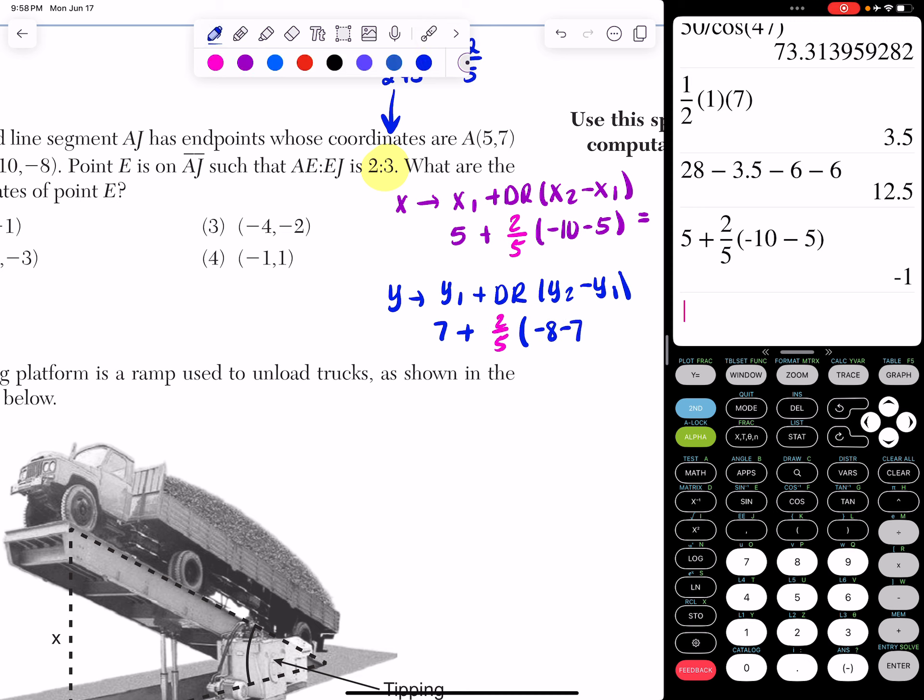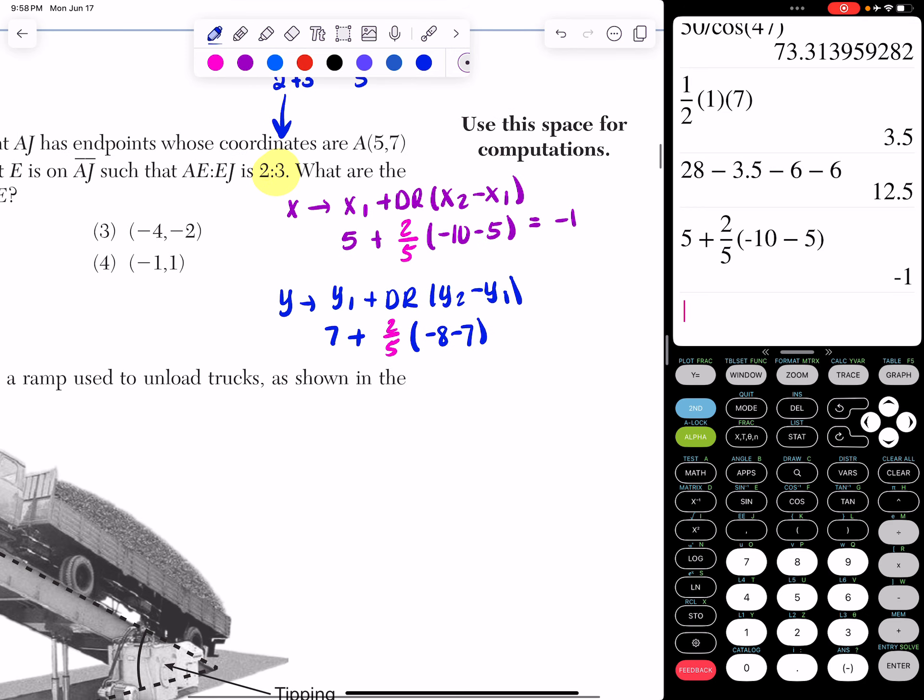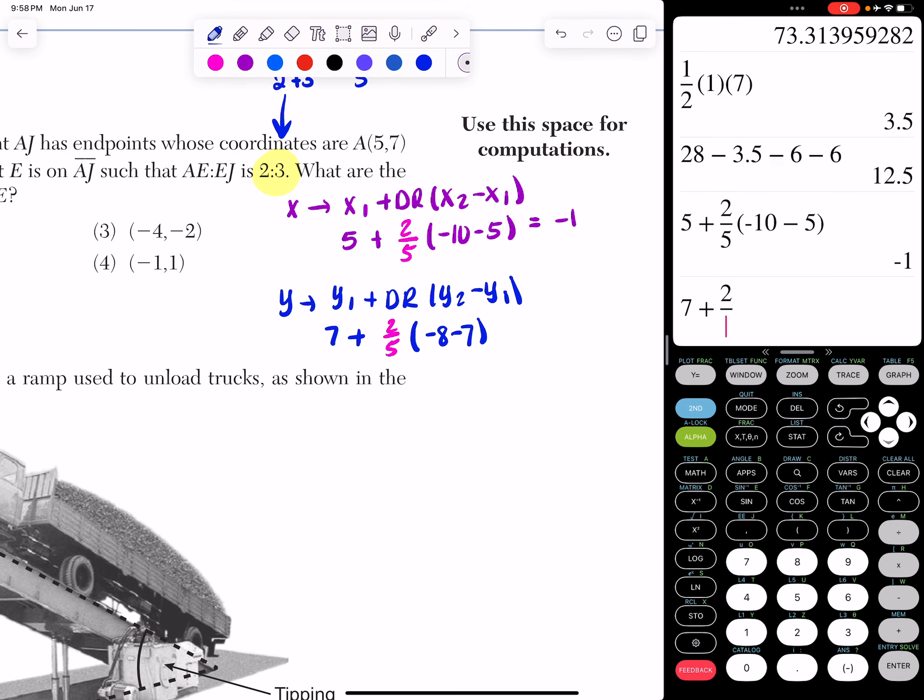So I'm going to do negative 8 minus 7, and then I type it into the calculator. So I'm going to do 7 plus 2 fifths times negative 8 minus 7. And when I type that in, I get a positive 1.